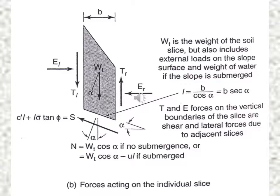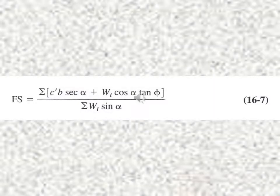N is the normal force, equal to W_t cos alpha for no submergence, or W_t cos alpha minus U times L if submerged. The boundary forces E_L, T_L, E_R, and T_R on adjacent slices are excluded in the simplified analysis. The overall factor of safety is then: FS equals the sum of [C-dash times B sec alpha plus W_t cos alpha times tan phi-dash] divided by the sum of W_t sin alpha.